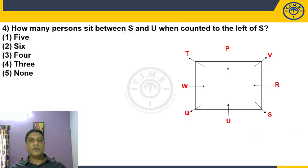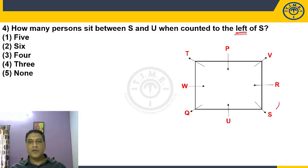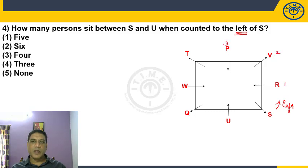Question 4: How many persons sit between S and U when counted to the left of S? It is specified — to the left of S. S is facing away, so left is in the anticlockwise direction. Counting between S and U in the anticlockwise direction: 1, 2, 3, 4, 5, 6. There are six persons between S and U. Choice 2.